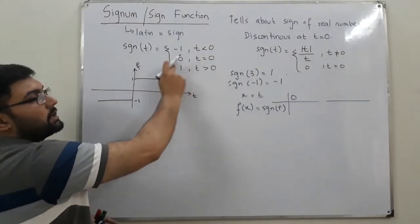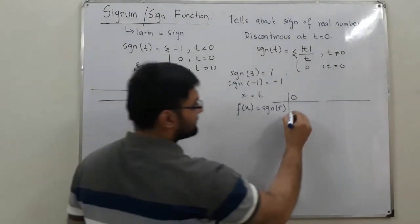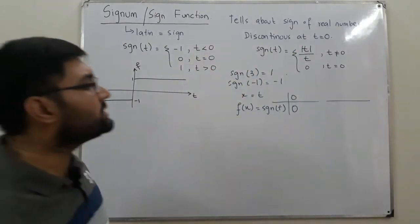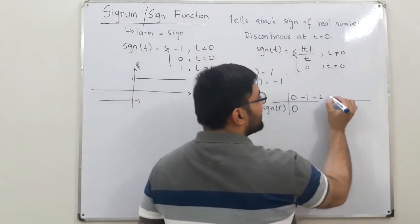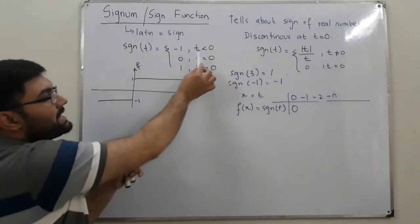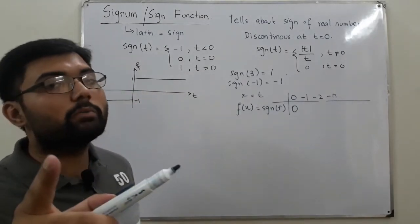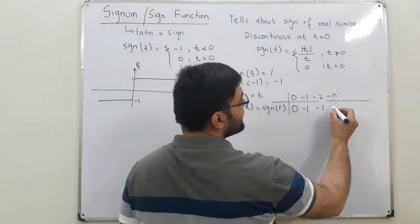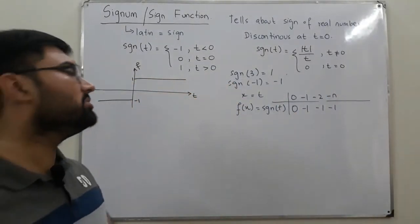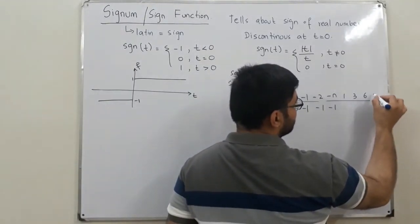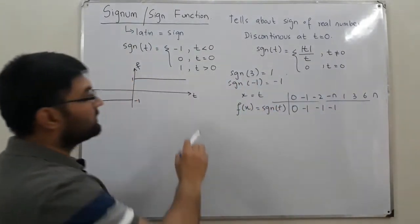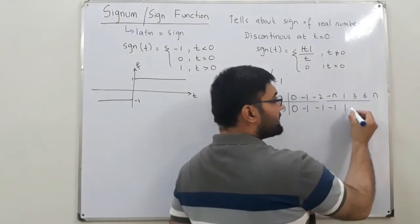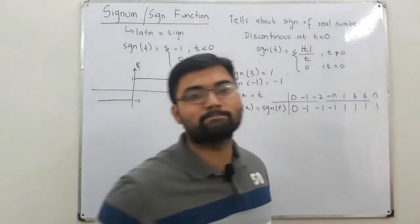If the input is 0, the output is 0. For any negative value — when t is less than 0, whether t is negative 1, negative 2, or any negative n — the value of the function is negative 1. For any positive value — 1, 3, 6, or any positive n — when t is greater than 0, the value of the function is 1.